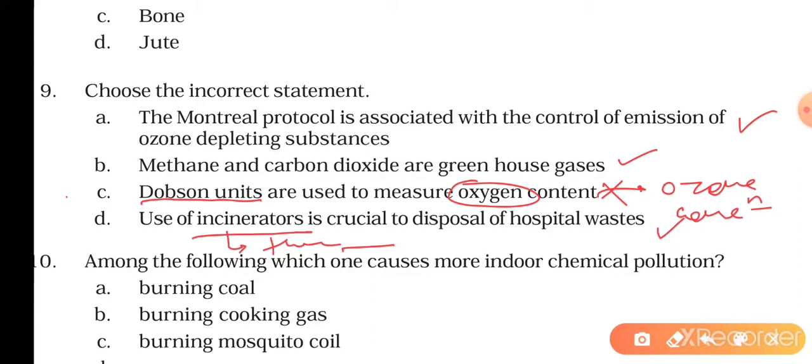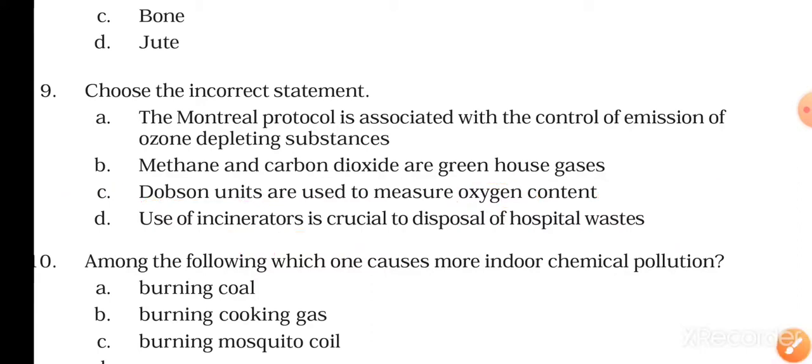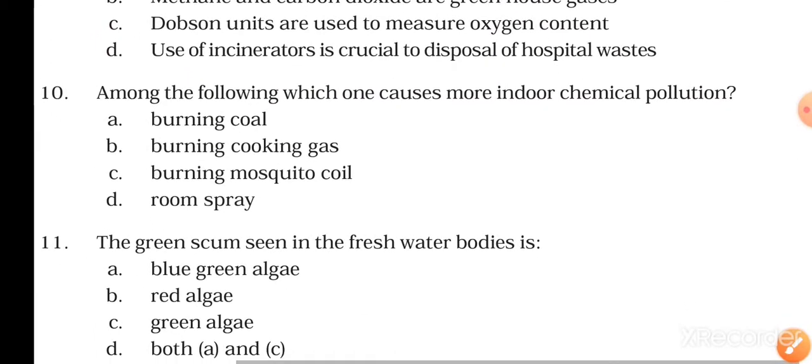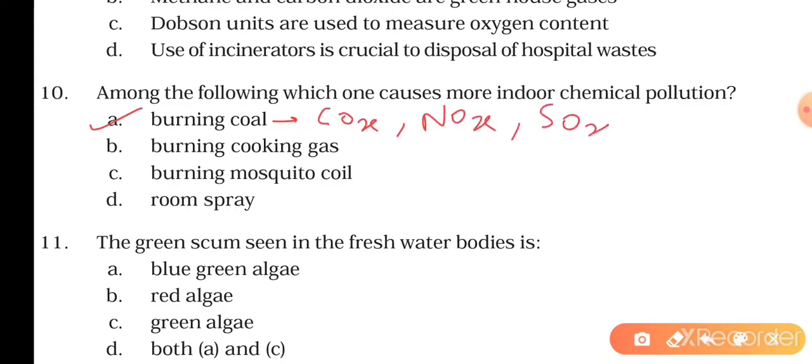The tenth question is: among the following, which one causes more indoor chemical pollution - burning coal, burning cooking gas, burning mosquito coil, or room spray? The correct answer will be burning coal. Why? Because it releases gases like oxides of carbon, oxides of nitrogen, oxides of sulfur, and the most dangerous is carbon monoxide. It combines with hemoglobin to form carboxyhemoglobin. So the right answer will be A.